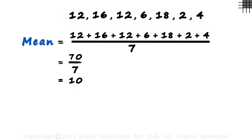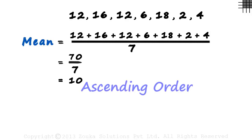What we are basically doing is finding an approximate central value of a given set of values. So there are a couple of other ways to find this central value. To understand them, we first need to arrange the values in ascending order from the least number to the highest number.